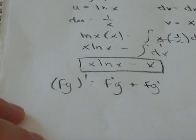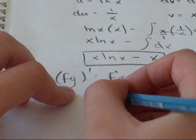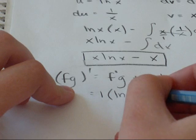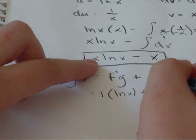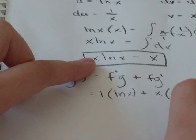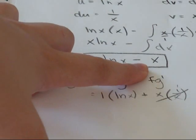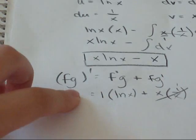So for x log x, first I'm going to take the derivative of x, which is just 1, times log x plus, leave the x alone. The derivative of log x is 1 over x. That's going to turn into just 1. And then we're bringing our minus x along.